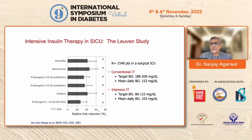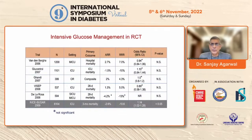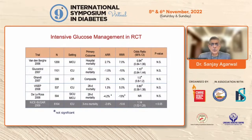After the Leuven study, intensivists across the world started targeting blood glucose between 80–110 mg/dL, and this was validated by other studies showing lower infection and mortality rates in intensively treated patients. However, targeting these lower levels increased hypoglycemia incidences, leading to higher mortality and morbidity from hypoglycemia. This raised the question of whether all patients should be targeted to 80–110 or whether higher targets were acceptable.